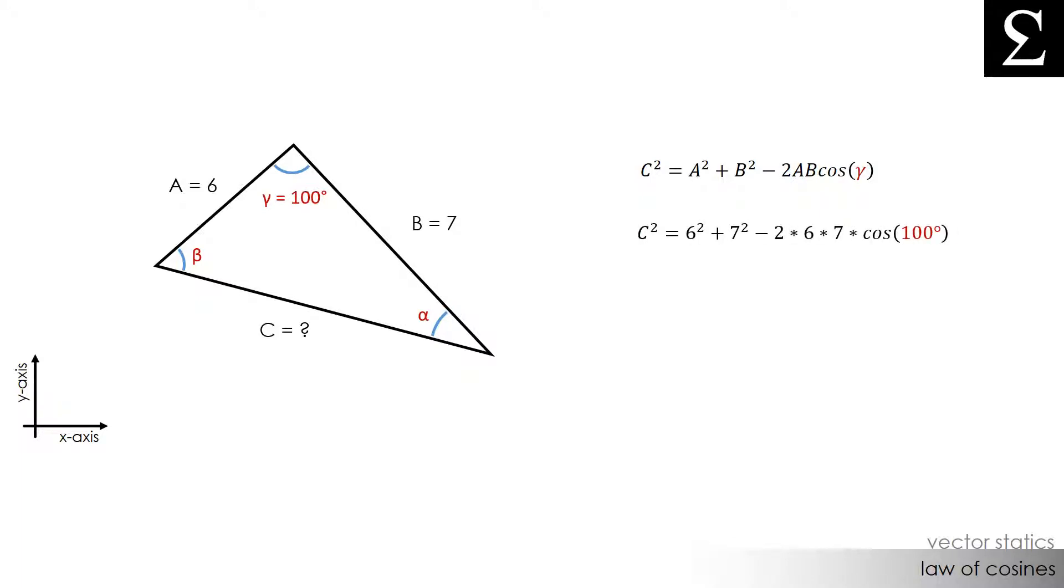we can leave c as the unknown and plug in 6 for a, 7 for b, and 100 degrees for angle gamma.